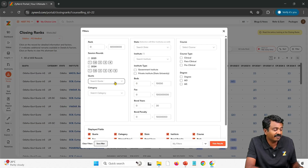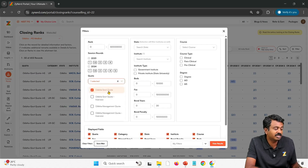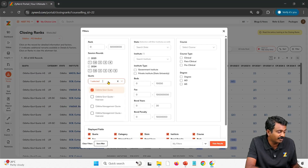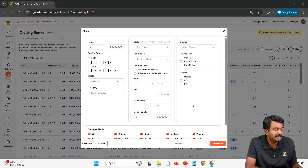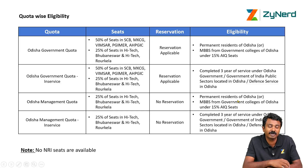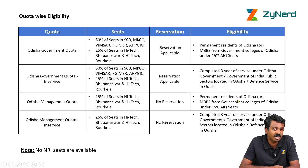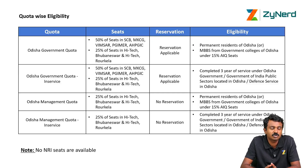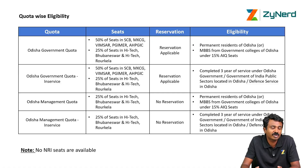If you are eligible under any one of these criteria, you will select the Odisha government quota. Under the management quota, you will also be eligible for Odisha management quota seats. These two quota types — government quota and management quota — are for those who are permanent residents of Odisha or those who have done MBBS from government colleges of Odisha under 15% AAQ.